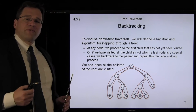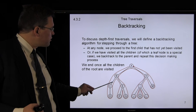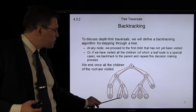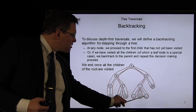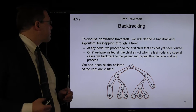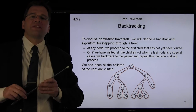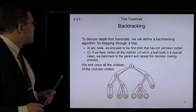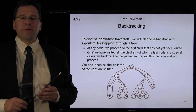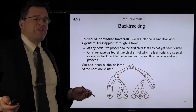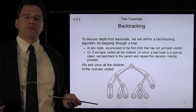Depth-first traversals use a backtracking algorithm. We go down as deep as possible until we can't go any further, and then we backtrack until we find another node we can descend into, and so on. We repeat this until we've visited every single node within the tree. At any node, we proceed to visit the next child that has not yet been visited. Once we've visited all the children, we backtrack to the parent and repeat. The depth-first traversal finishes after we've visited all of the children of the root.